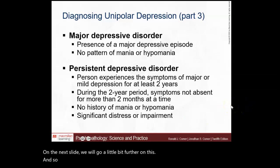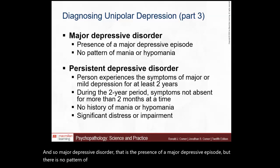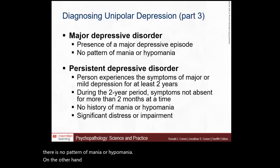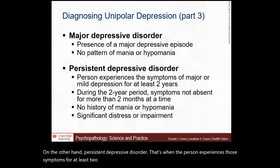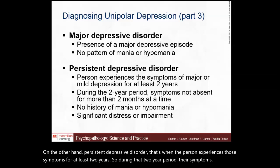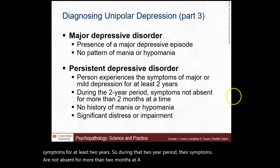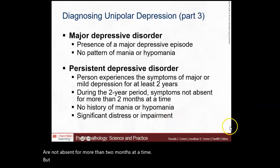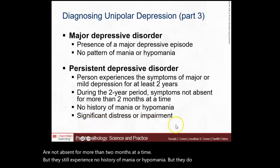Major depressive disorder is the presence of a major depressive episode with no pattern of mania or hypomania. Persistent depressive disorder, on the other hand, is when the person experiences those symptoms for at least two years, during which symptoms are not absent for more than two months at a time. There is still no history of mania or hypomania, but the person experiences significant distress or impairment.